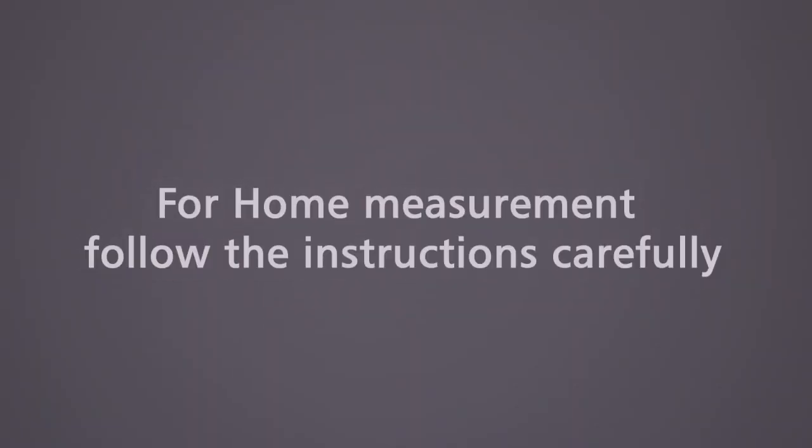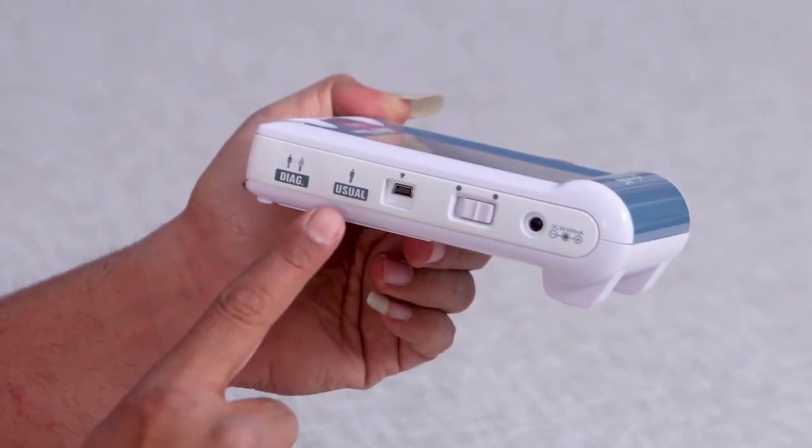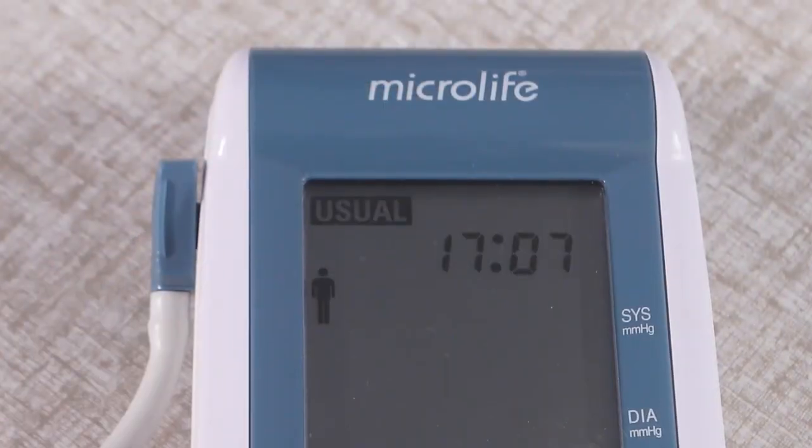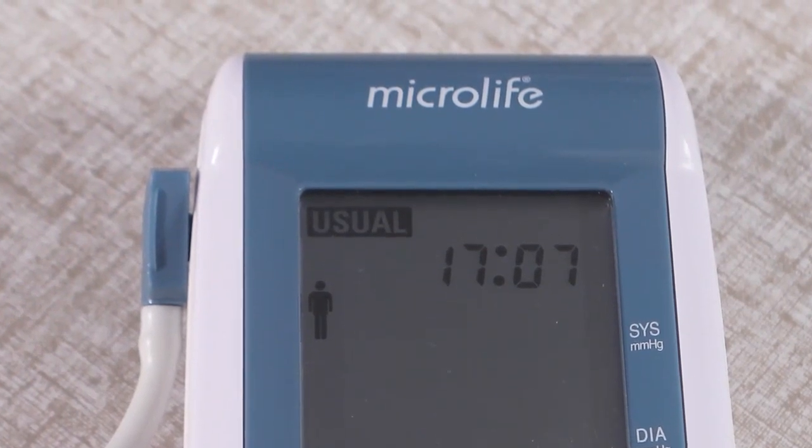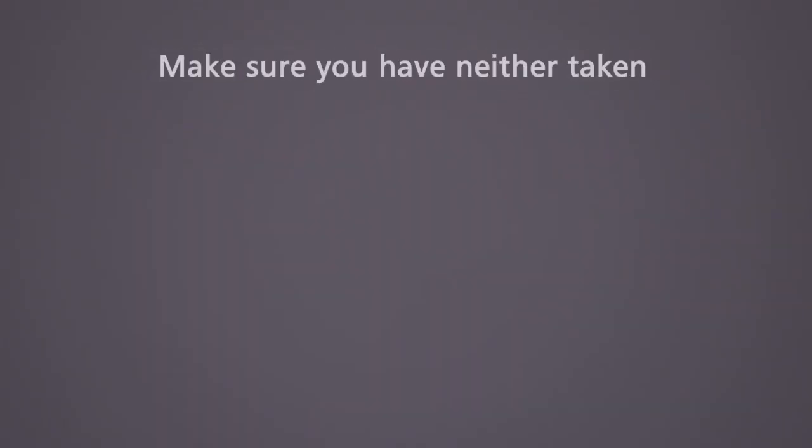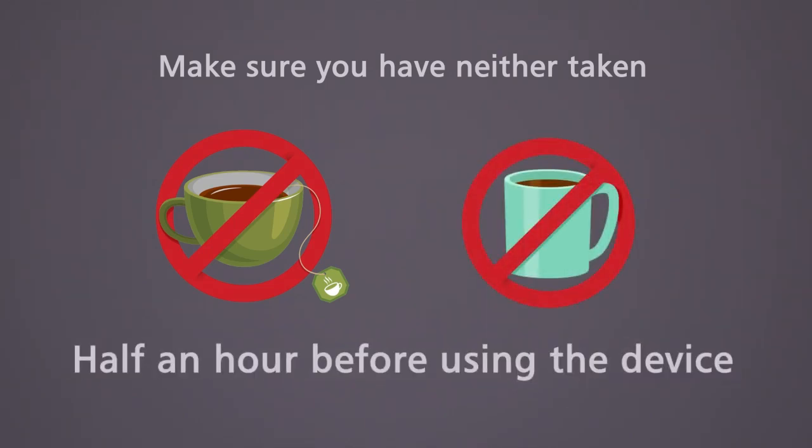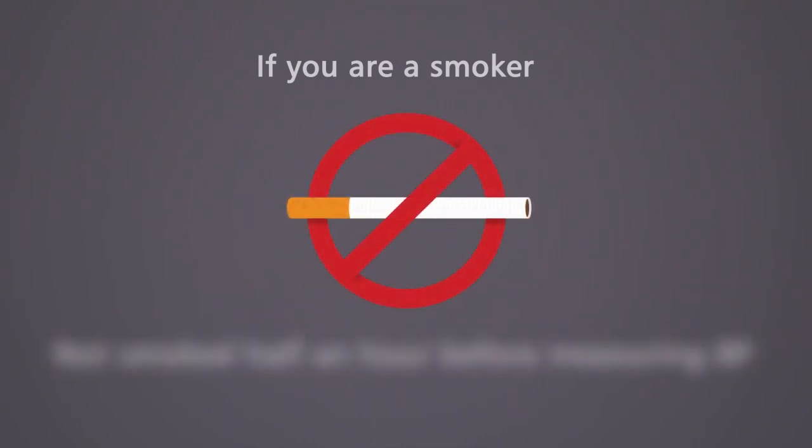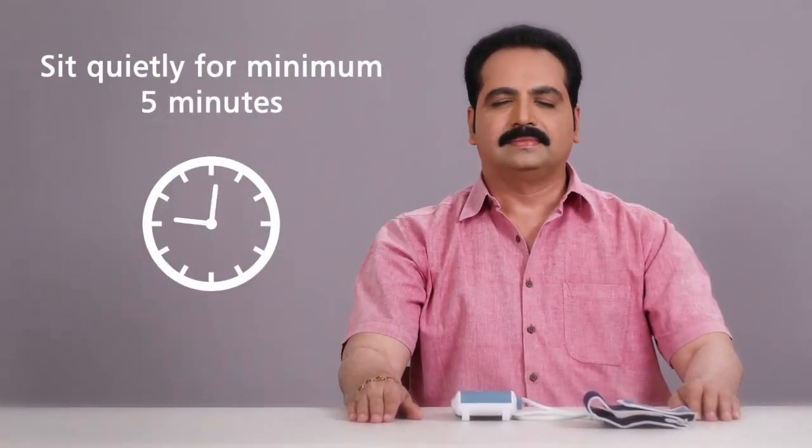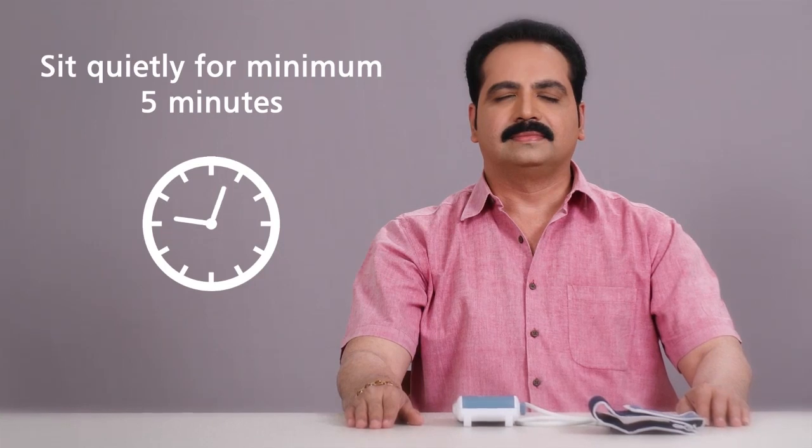For home measurement, follow the instructions carefully. Keep the device in the usual mode unless indicated by clinician. Make sure you have neither taken tea or coffee at least for half an hour before using the device. If you are a smoker, ensure you have not smoked half an hour before measuring BP. Also make sure that you sit quietly for a minimum of 5 minutes before using this device.